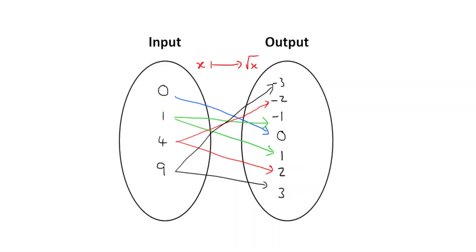What we're saying is that on the left-hand side, one input — for example, the input 1 — can be mapped onto two possible outputs, negative 1 and positive 1. The same is true for 4: it maps onto negative 2 and positive 2. A single input can be mapped onto two or possibly more outputs. So we call this type of mapping a one-to-many, because a single input can be mapped onto more than one output.